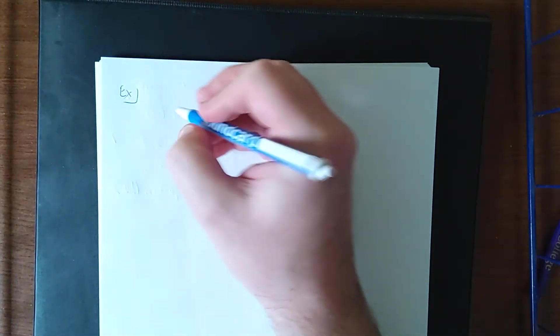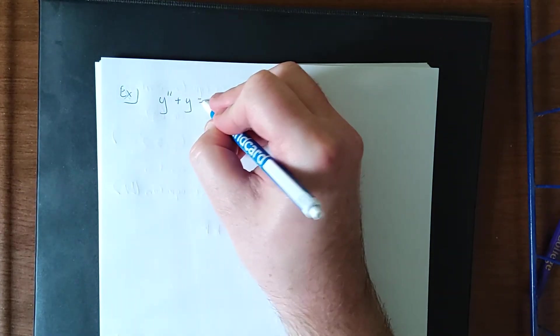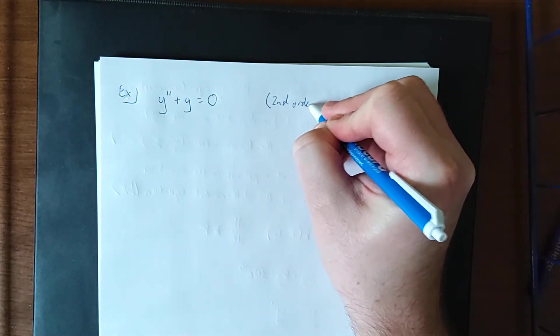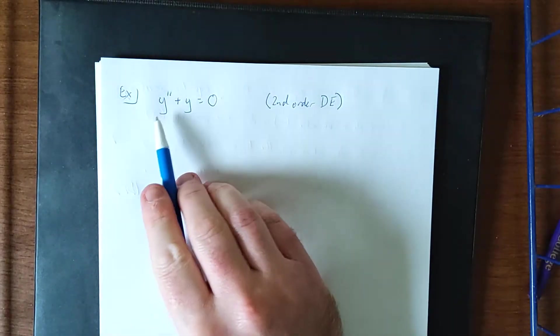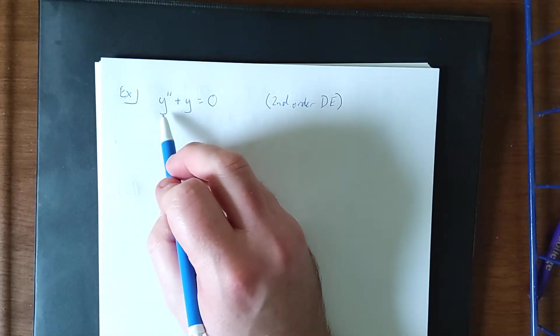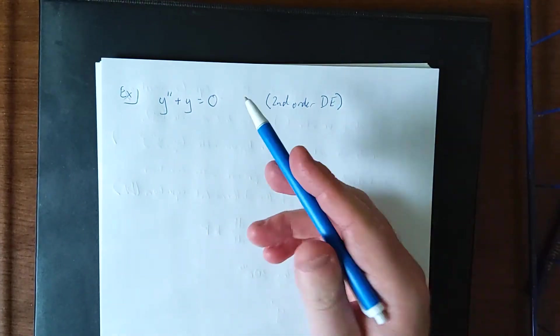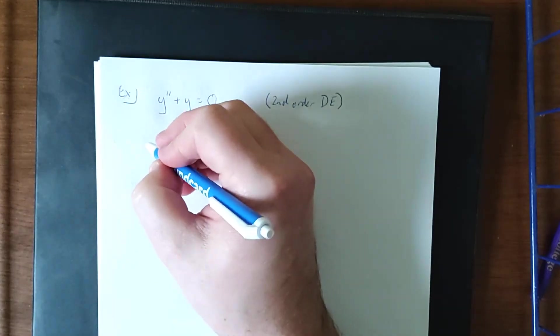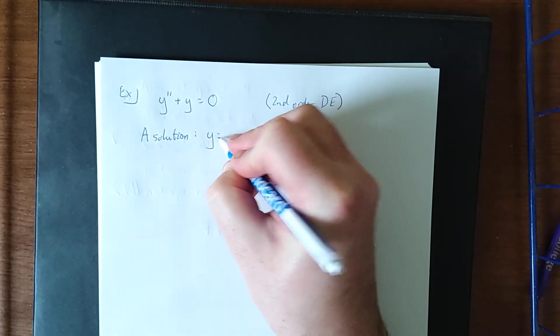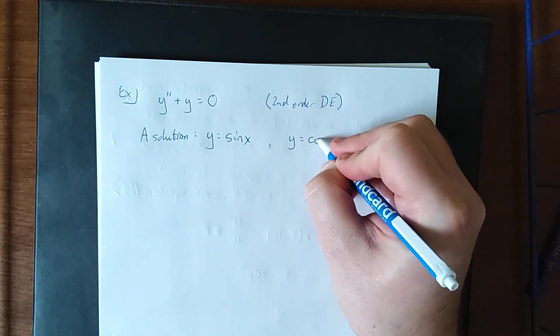So for example, I would like to consider the second derivative of a function plus the original function is equal to zero. This is a second order differential equation. Highest derivative present is the second derivative. Now when we think of functions whose second derivative plus the original function is equal to zero, that would be like saying take two derivatives and you wind up with the negative of the original function. I can think of two in particular, which would be y is equal to the sine of x and y is equal to the cosine of x.